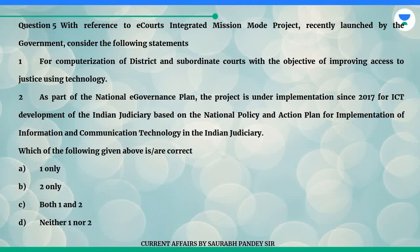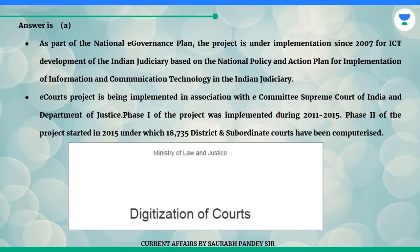A. One only. B. Two only. C. Both one and two. D. Neither one nor two. Answer is A. The eCourts project is being implemented in association with the eCommittee, Supreme Court of India and Department of Justice. Phase I of the project was implemented during 2011 to 2015. Phase II of the project started in 2015, under which 18,735 district and subordinate courts have been computerized.